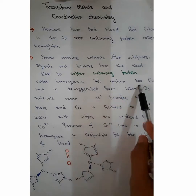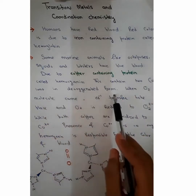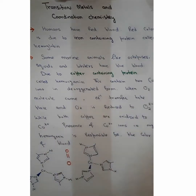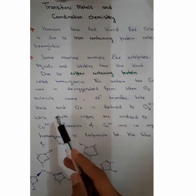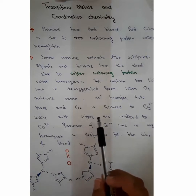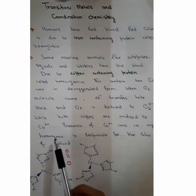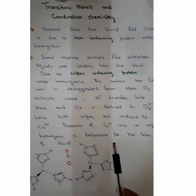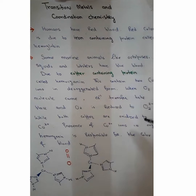Hemocyanin contains two copper(+1) ions in the deoxygenated form. When it encounters an oxygen environment, an electron transfer reaction takes place: the oxygen molecule is reduced to peroxide ion O2(2-), and both coppers present in the hemocyanin are oxidized to the copper(2+) form. The presence of copper(2+) ions in oxygenated hemocyanin is responsible for the blue color of the blood. So red color is due to iron and blue color is due to copper — both transition metals.